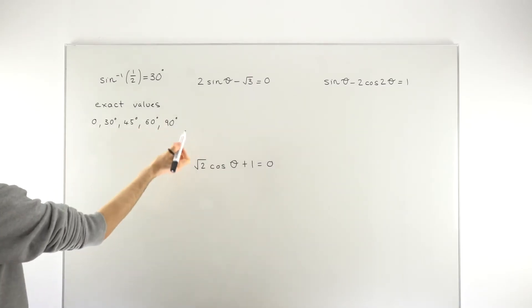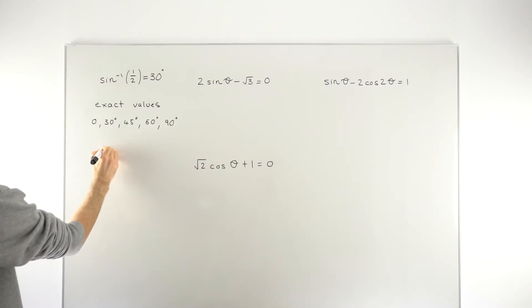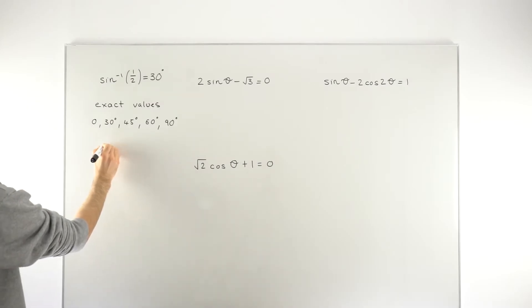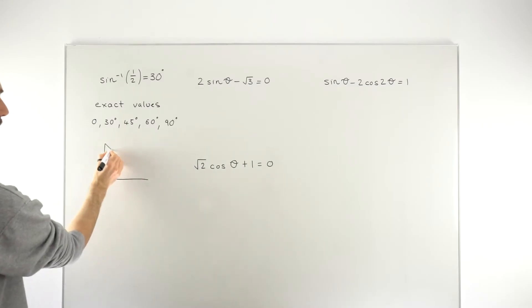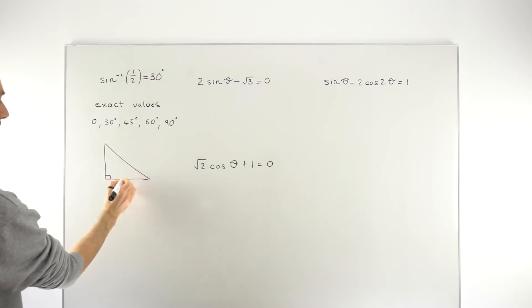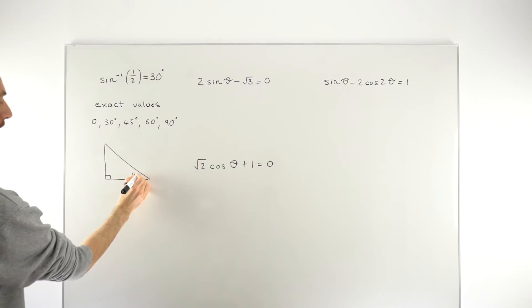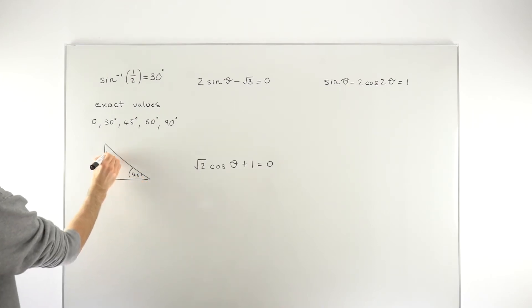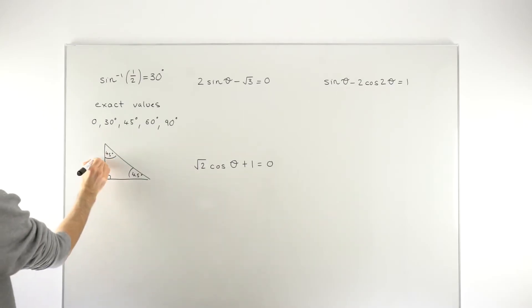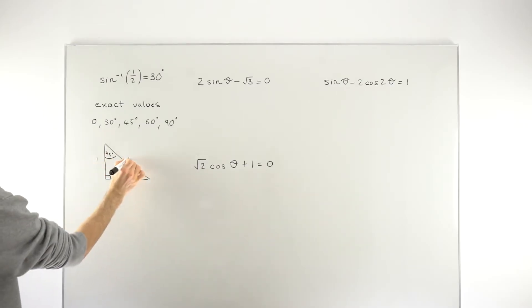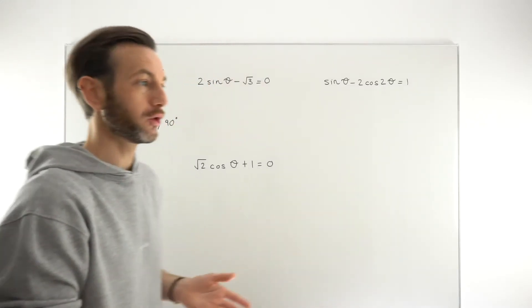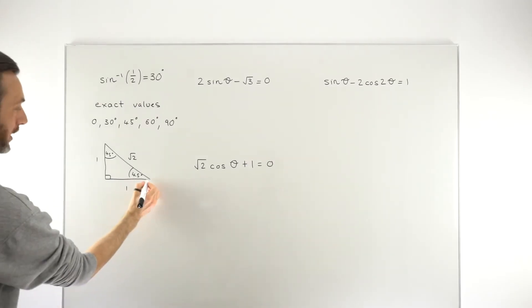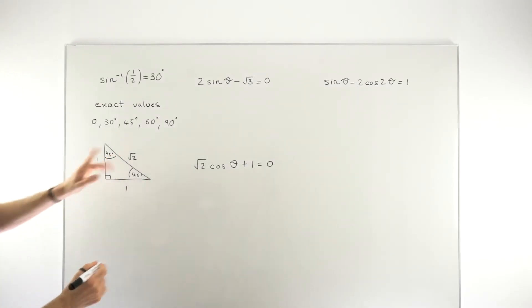To memorize and learn these values, we use two trig triangles. You've just got to memorize these triangles. The first one is a right-angle triangle with 45 degrees in each of the other corners, and the side lengths are 1, 1, and by Pythagoras, root 2. So 45 degrees in the corners — or pi/4 if you're working in radians — and just remember those side lengths.